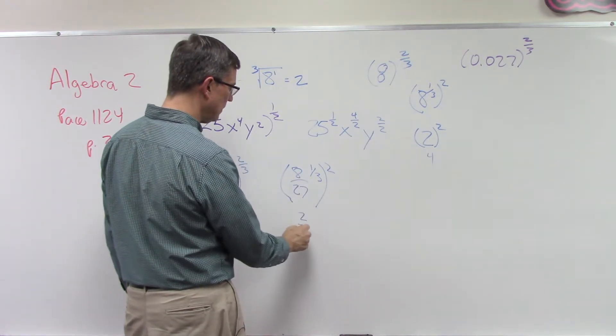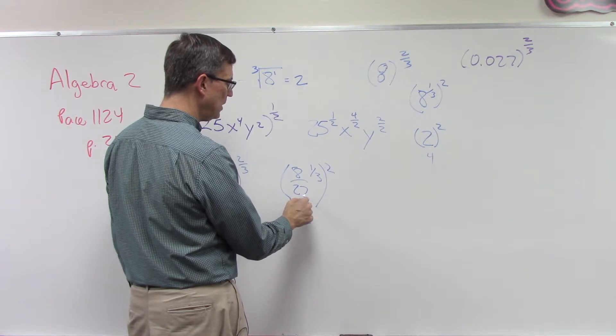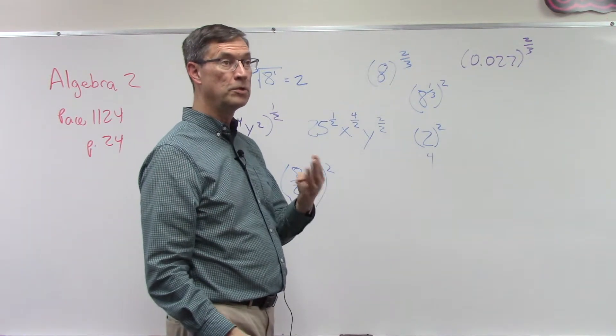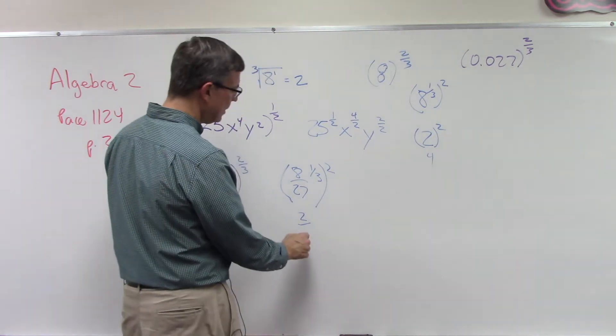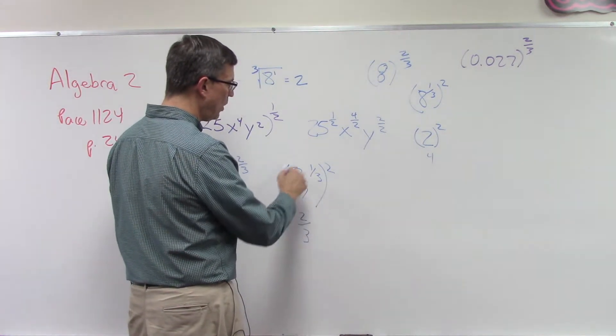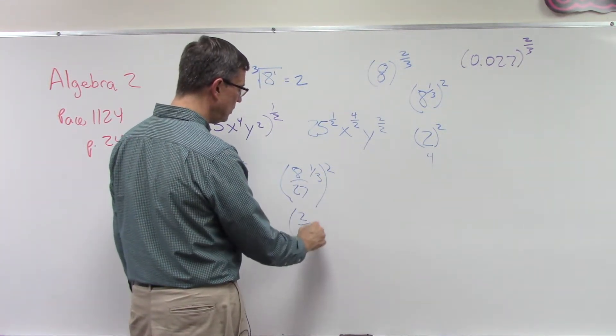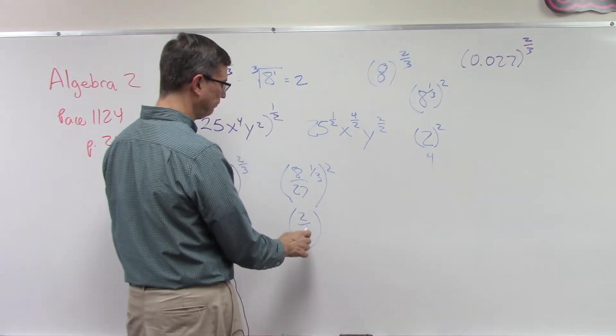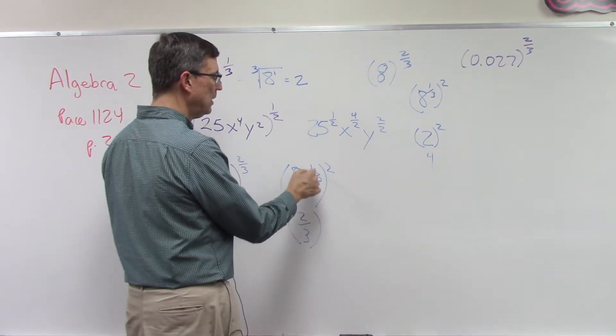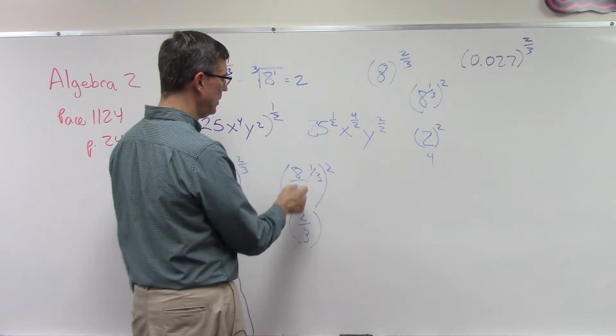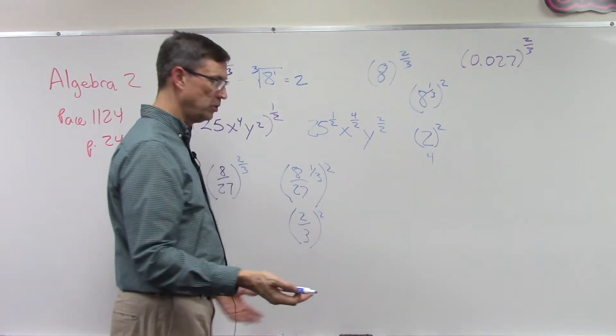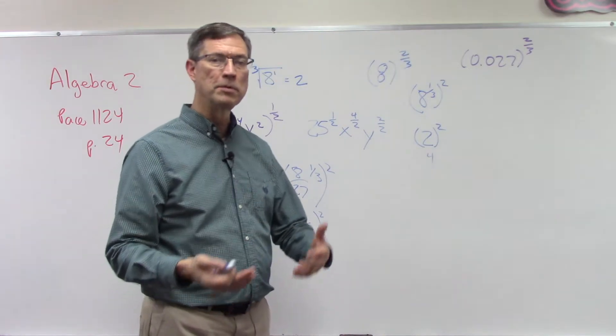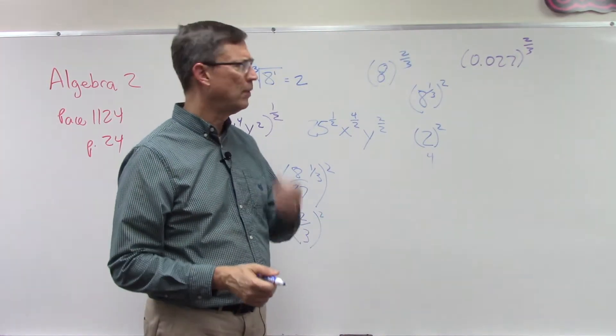I already did this one. This numerator becomes 2 because 2 times 2 times 2 is 8. 27 is 3 times 3, which is 9, times 3 again is 27. So this whole part here simplifies to be 2/3. That would be the third root of 8/27. Now you're going to raise that to the second power, which just means 2/3 times 2/3. I'll let you finish that one. That's pretty easy.